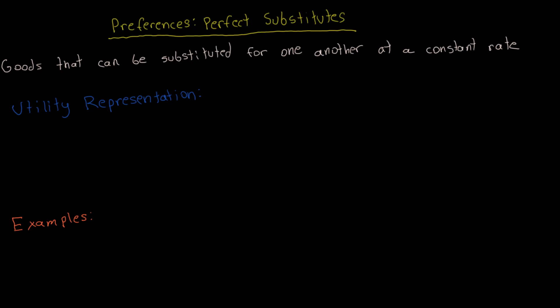I'll start off with the utility representation. The utility as a function of good 1 and good 2 is equal to a times x1 plus b times x2, where a and b are just some parameters of this utility function. As you can see, this is actually a linear utility function.